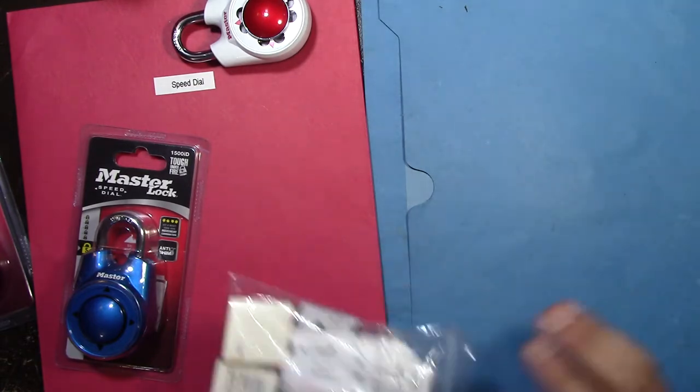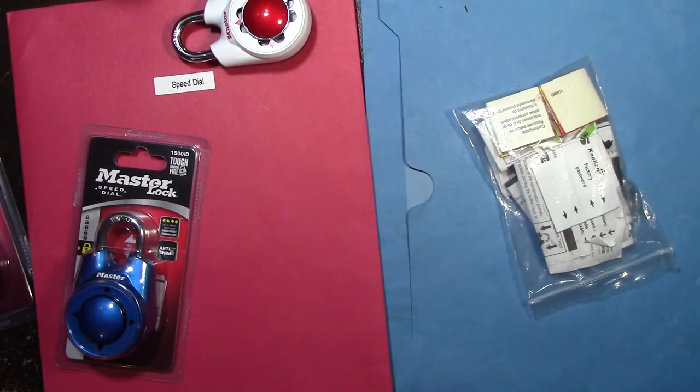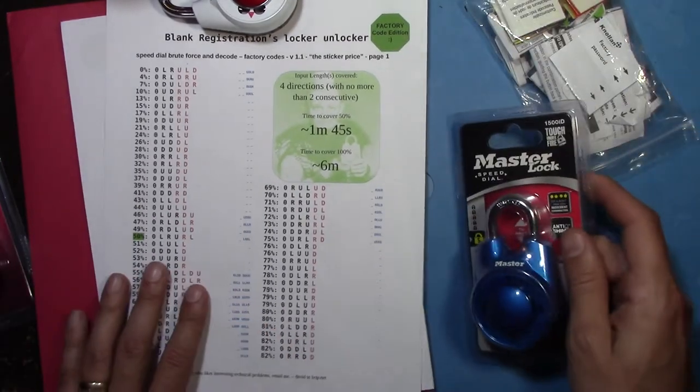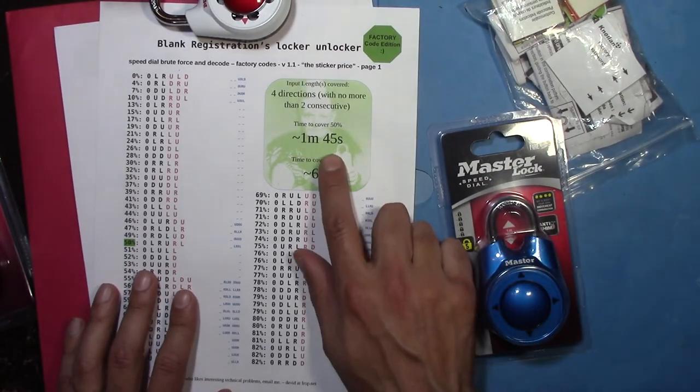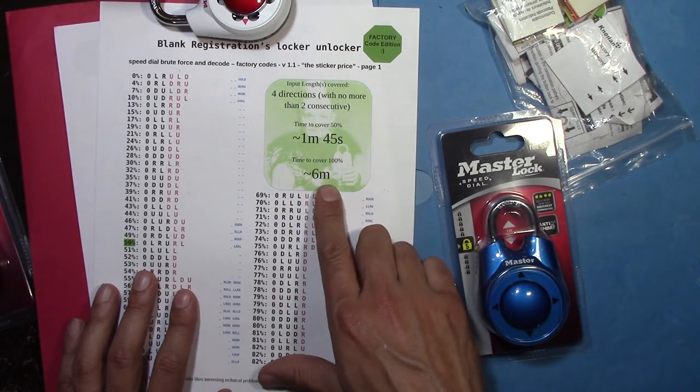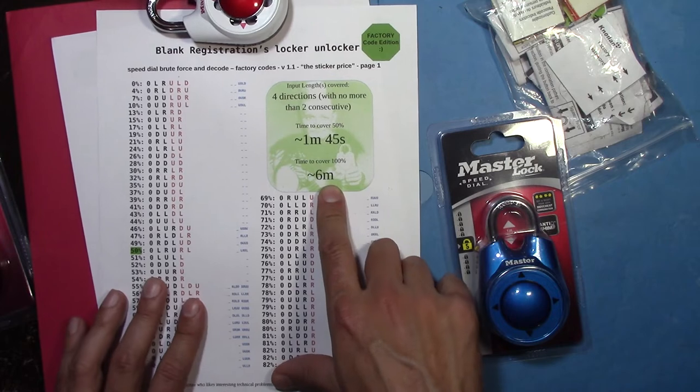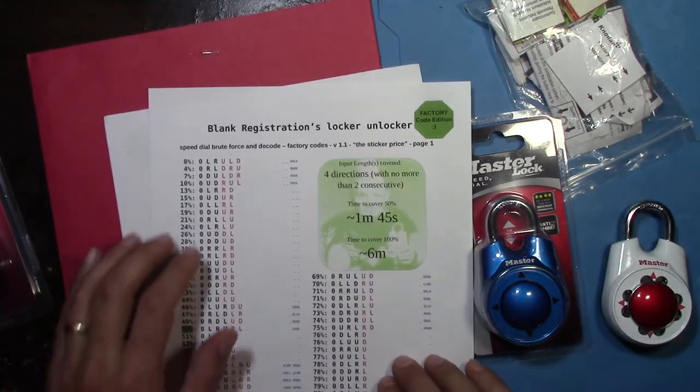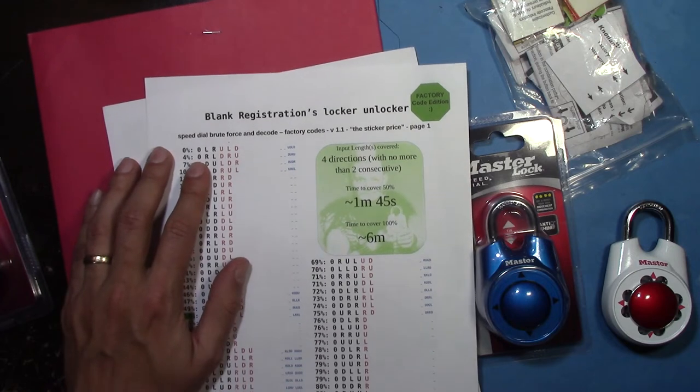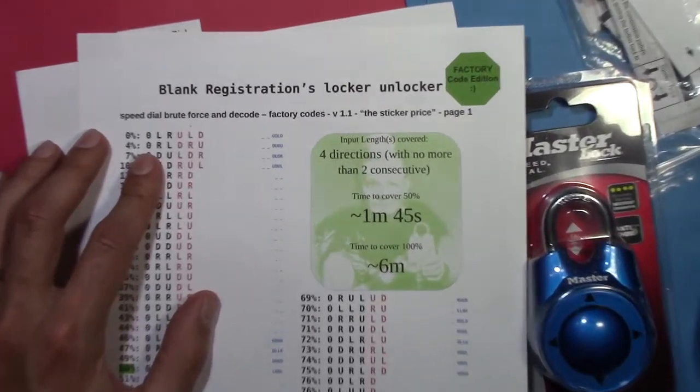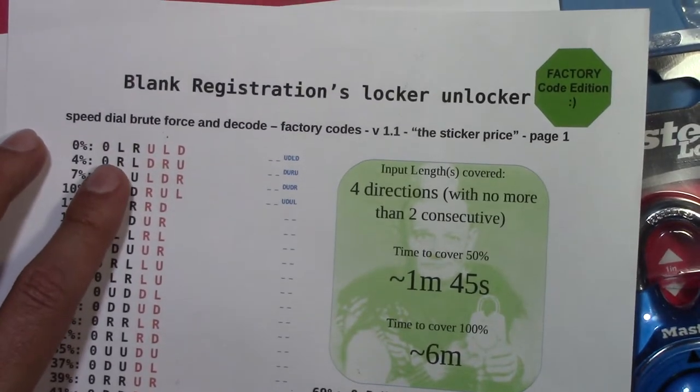And by very quickly I mean you can check half of the input space in about a minute 45 seconds. You can check the whole thing in about six minutes. So look at this top line of this sheet. Left right up left down.